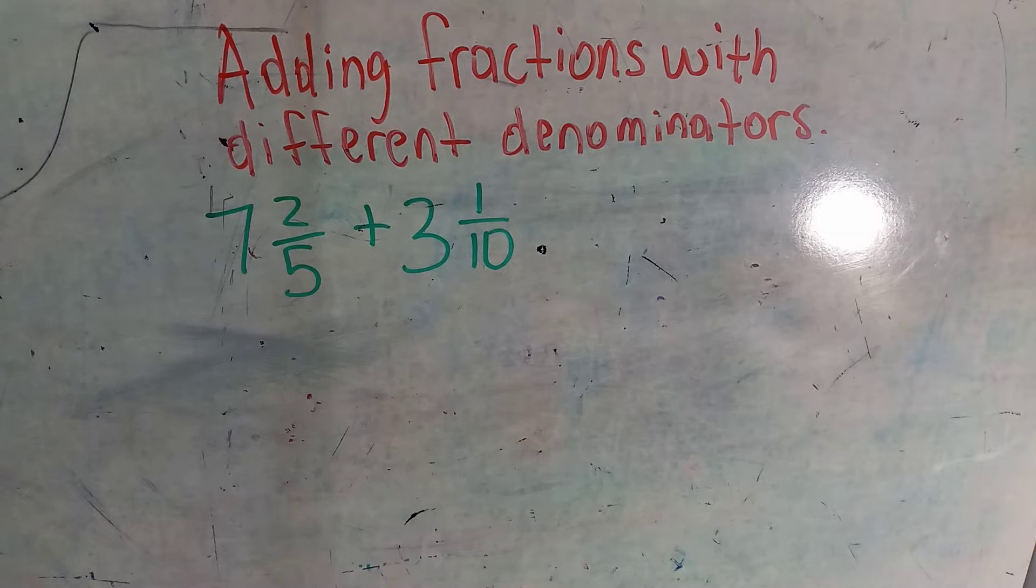Here we are adding mixed numbers with different denominators. The first thing you do when you're adding mixed numbers, when you're adding or subtracting mixed numbers - it's different when you're multiplying, but when you're adding and subtracting, the rule is the same.